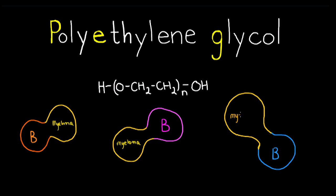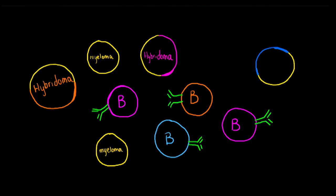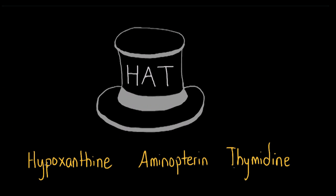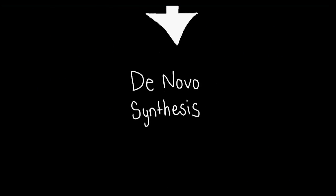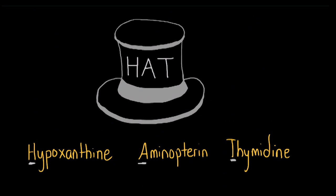Next, the plasma membranes of the B cells and the myeloma cells are fused together using polyethylene glycol, or PEG. Next, we select for hybridoma cells — which are B cells fused with myeloma cells — using HAT medium, which stands for hypoxanthine, aminopterin, and thymidine. Aminopterin blocks de novo synthesis of dGTP and dTTP, forcing cells to rely on the recycling pathways that depend on the enzyme HGPRT.